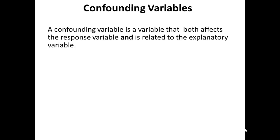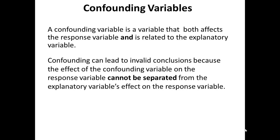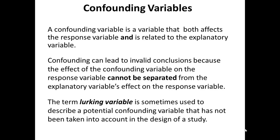This brings us to our discussion of confounding variables. A confounding variable is a variable that both affects the response variable and is also related to the explanatory variable. Confounding can lead to invalid conclusions because the effect of the confounding variable on the response variable cannot be separated from the explanatory variable's effect on the response variable. The term 'lurking variable' is sometimes used to describe a potential confounding variable that has not been taken into account in the design of the study.